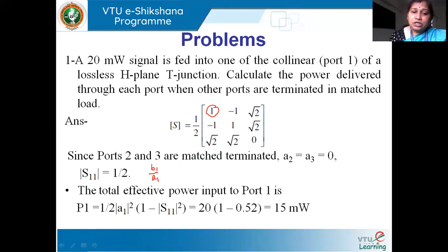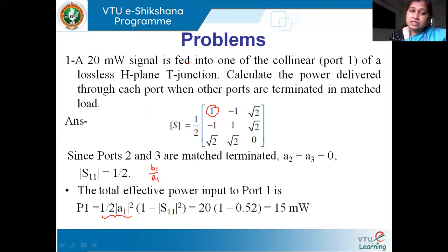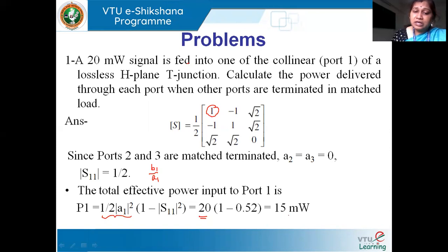Now, the total effective power input at port one — how much power has been given — the input is 20 milliwatts. After reflection, how much power is effectively transmitted? That is given by the equation: (1/2)|A1|² × (1 − |S11|²). The incident power is 20 milliwatts, and S11 is 0.5, so |S11|² = 0.25. Therefore, the effective input power at port one is 20 × (1 − 0.25) = 15 milliwatts.